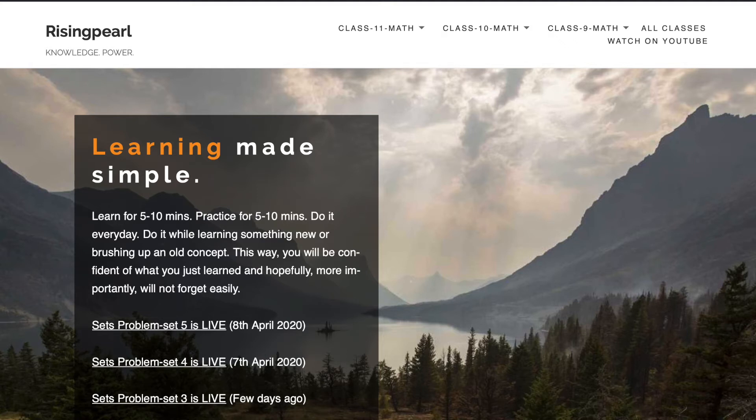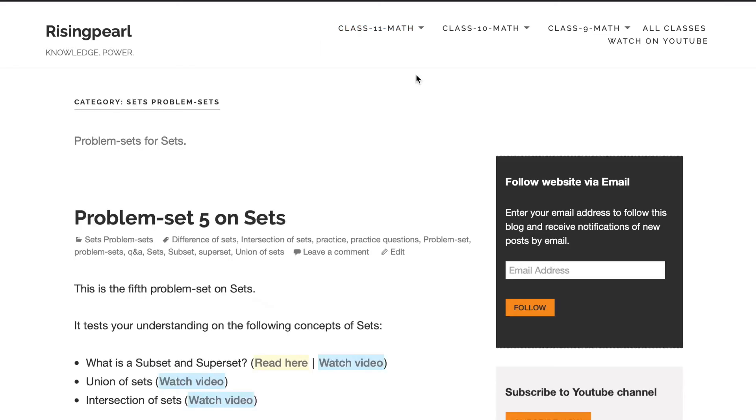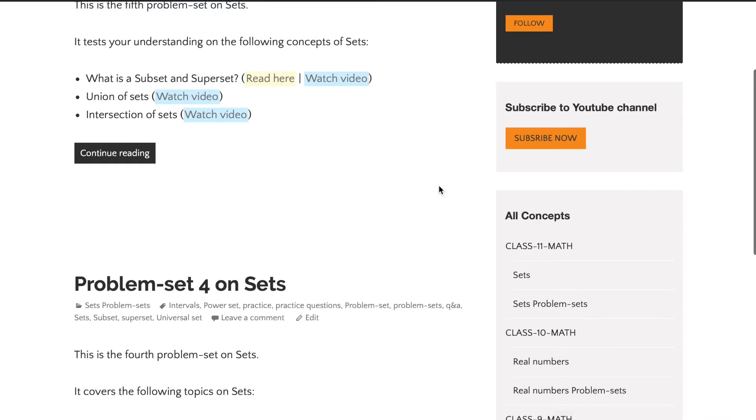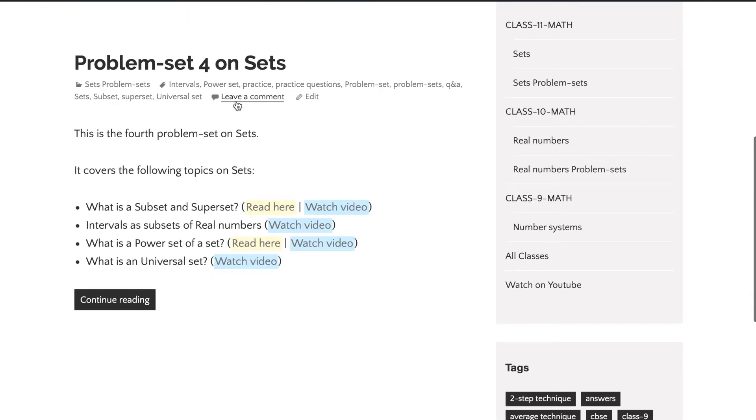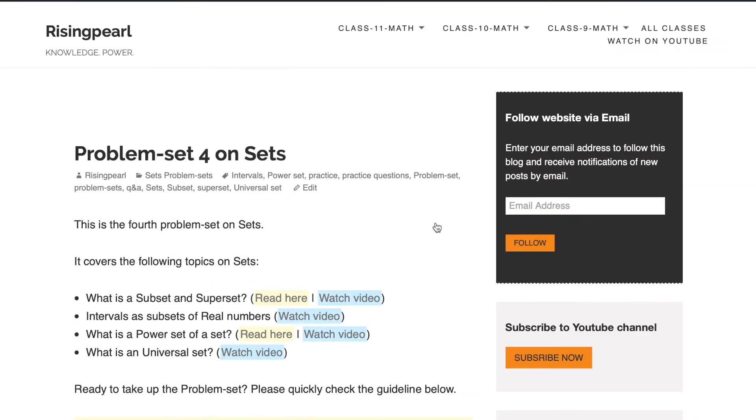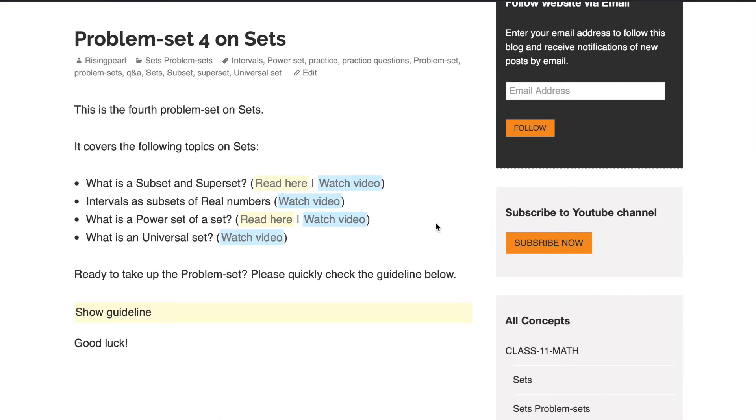Hello and welcome. Problem set number four on sets is live. Simply go to www.risingpearl.com and from the top menu select class 11 math and click on sets problem sets. This should open up all of the problem sets on the topic sets and let's click problem sets number four. Now here we are inside the problem set four page.